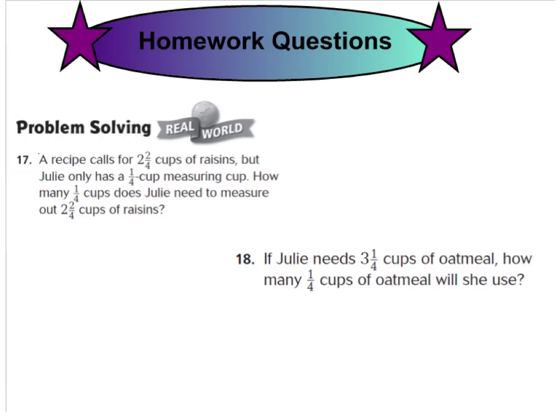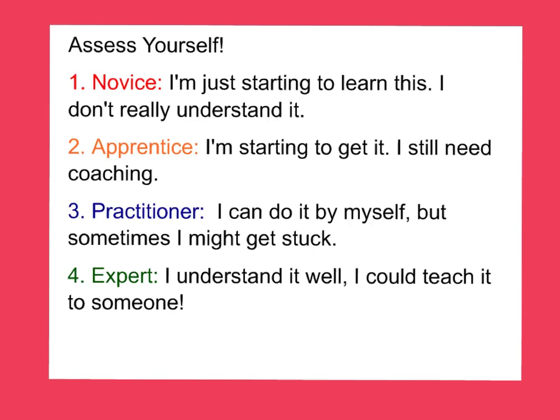Here are the homework questions for tonight. Your homework questions are the 2 problem-solving questions, number 17 and number 18. The rest of the problems on this page are going to be in our next video. Go ahead and do the 2 problem-solving questions, number 17 and 18. When you're done with your homework, I want you to assess yourself — tell me whether you feel like you're a novice, apprentice, practitioner, or expert. Put this next to problems 17 and 18.